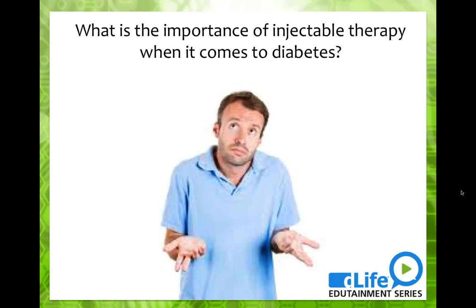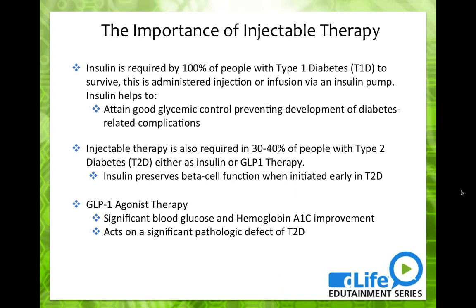Although we can't say you can stop injecting to take away the pain, it's important to first understand why injectable therapy is important — and one of the first steps in managing anything is acceptance. Insulin is required by about 100% of people with type 1 diabetes to survive. It's given either through an injection or an infusion via an insulin pump, and it allows us to attain good glycemic control, preventing diabetes-related complications.